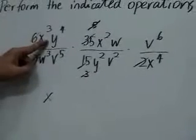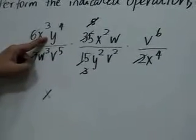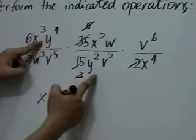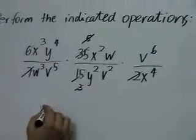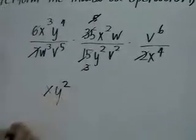y to the 4 in the numerator, divided by y squared in the denominator, leaves us with y squared in the numerator.